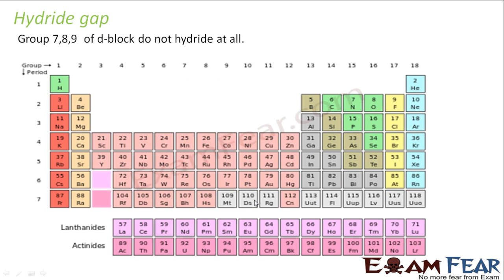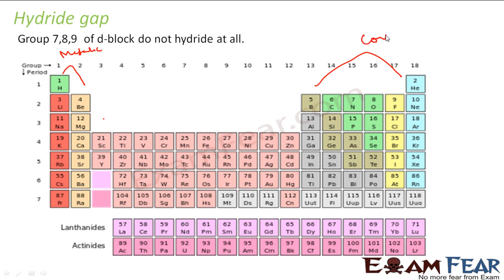So what is hydride gap? If you see, group one and group two form hydrides, and these groups also form hydrides — these form metallic hydrides, these form covalent, and these form interstitial hydrides. But out of these, groups seven, eight, and nine — these three groups don't form hydrides.